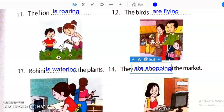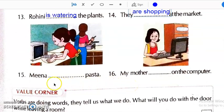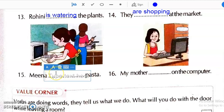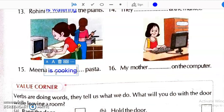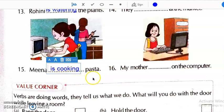I think from the picture also you can know which verb you have to write. Then, next Meena dash pasta. Here we will write what she is doing. Meena is cooking pasta. And the next.